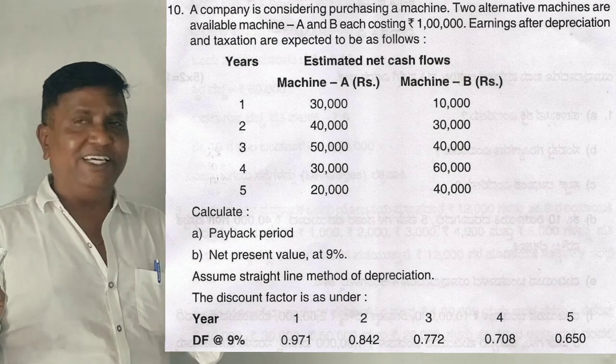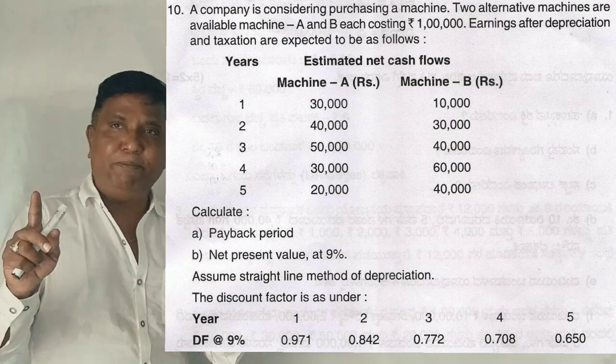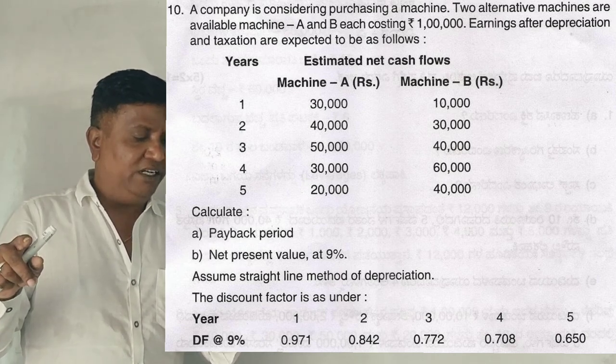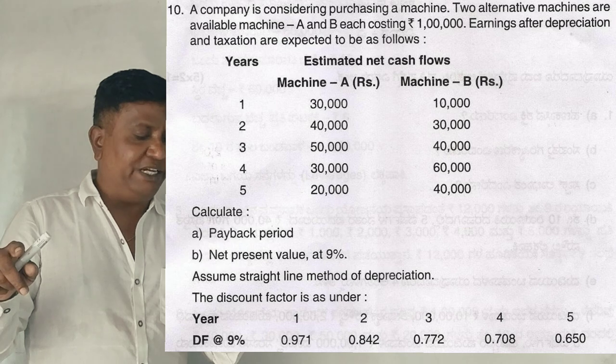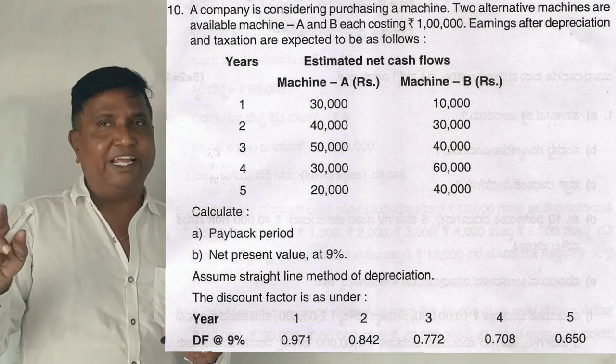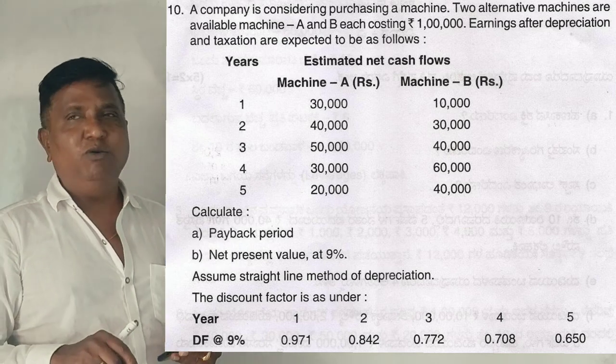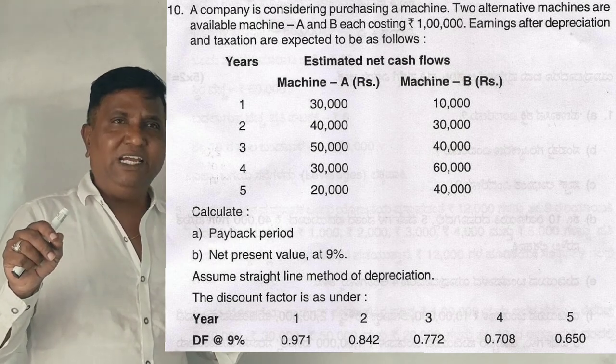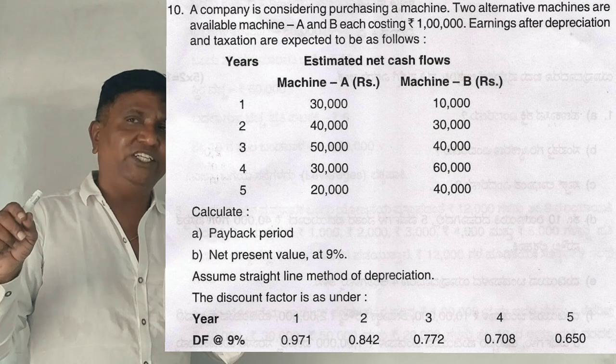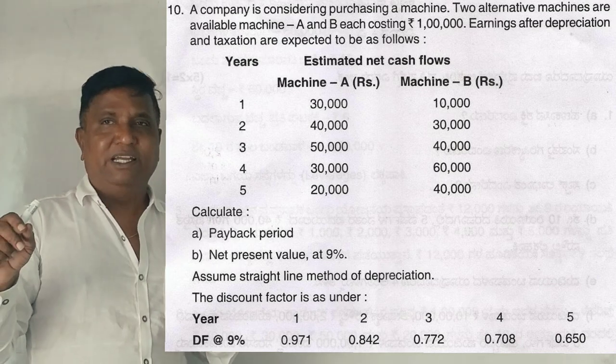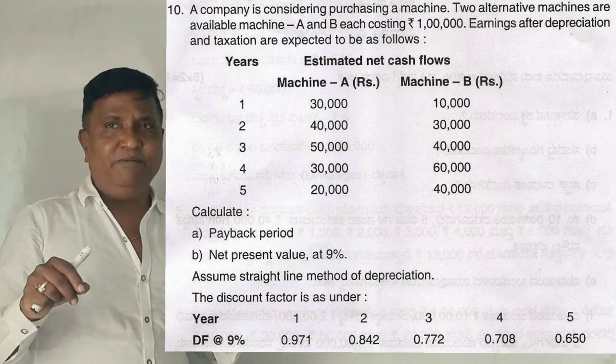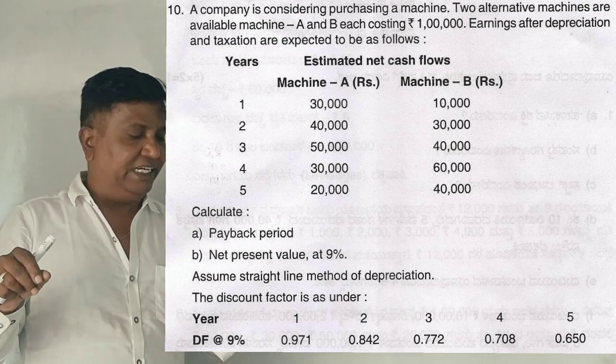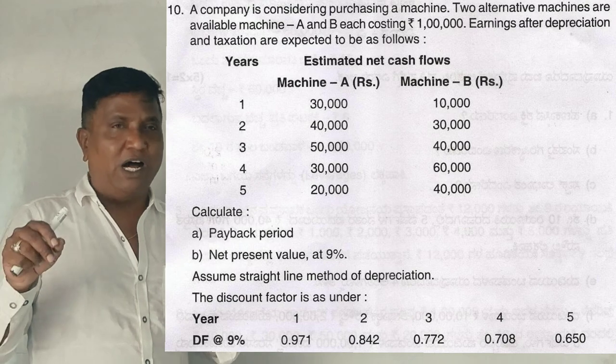What is asked is calculate payback period, net present value at 9%. Assume that straight line method of depreciation discount factor is at 9%. Now, one question is given.